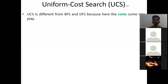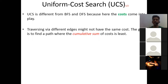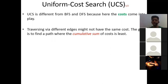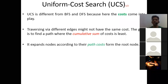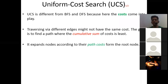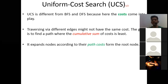Uniform cost search is different from breadth first search and depth first search because here cost comes into play. We are not using cost in BFS and DFS. In uniform cost search, we are looking for only the least cumulative cost to reach the goal — similar to minimum spanning tree. Traversing via different edges may not have the same cost. The goal is to find a path where the cumulative cost is least. It expands nodes according to their path cost from the root node — we look at the path with minimum cost and move in that direction only.